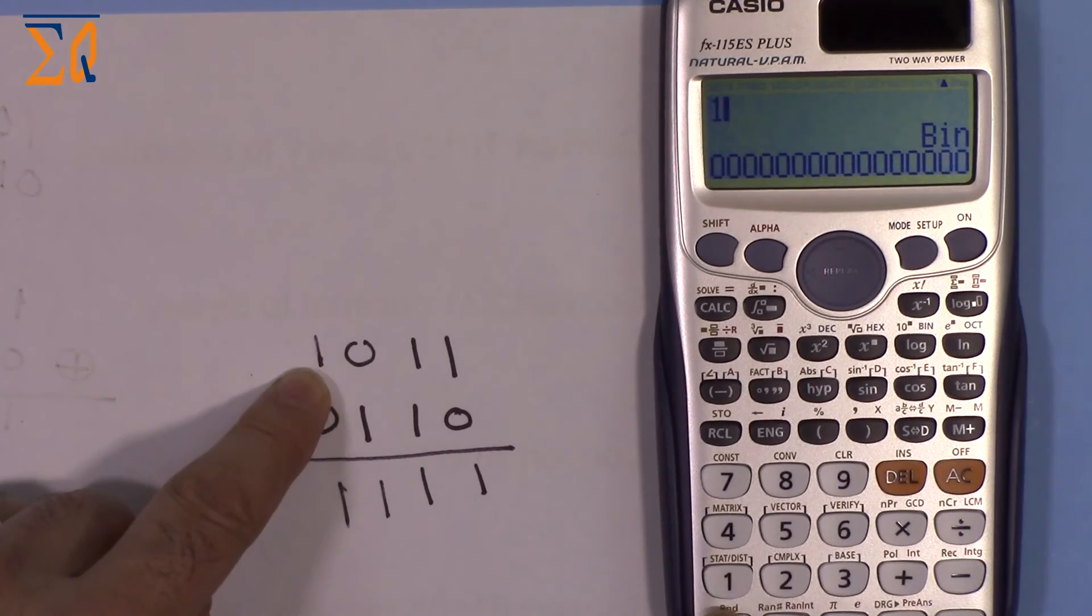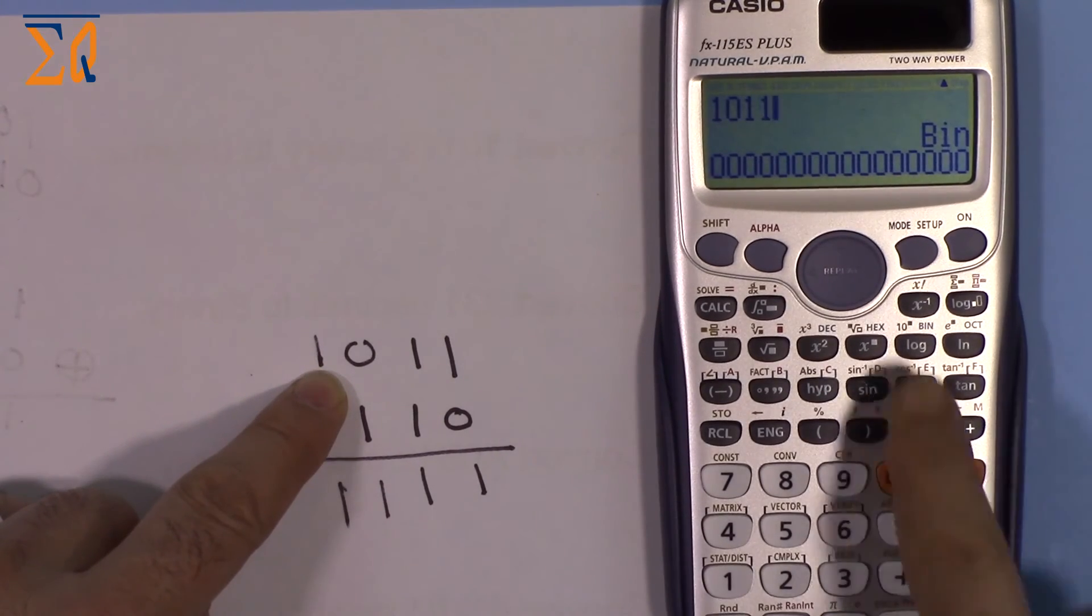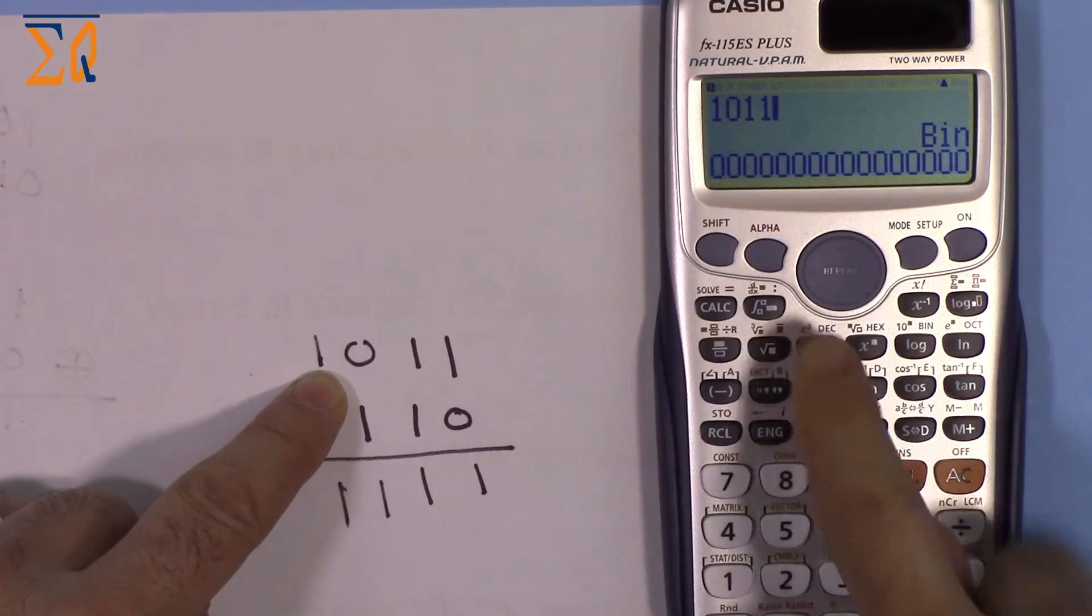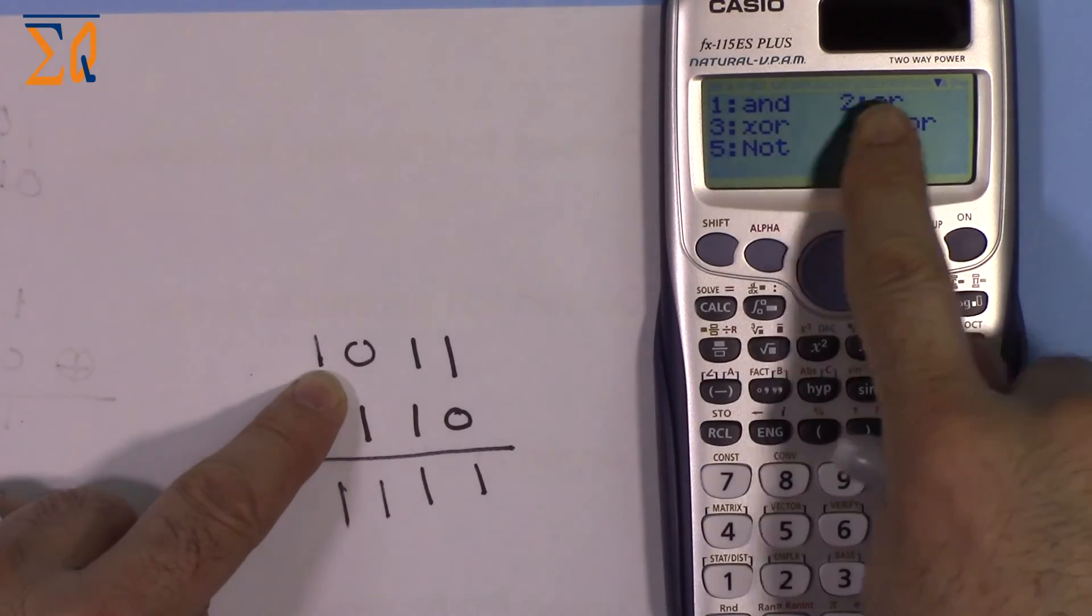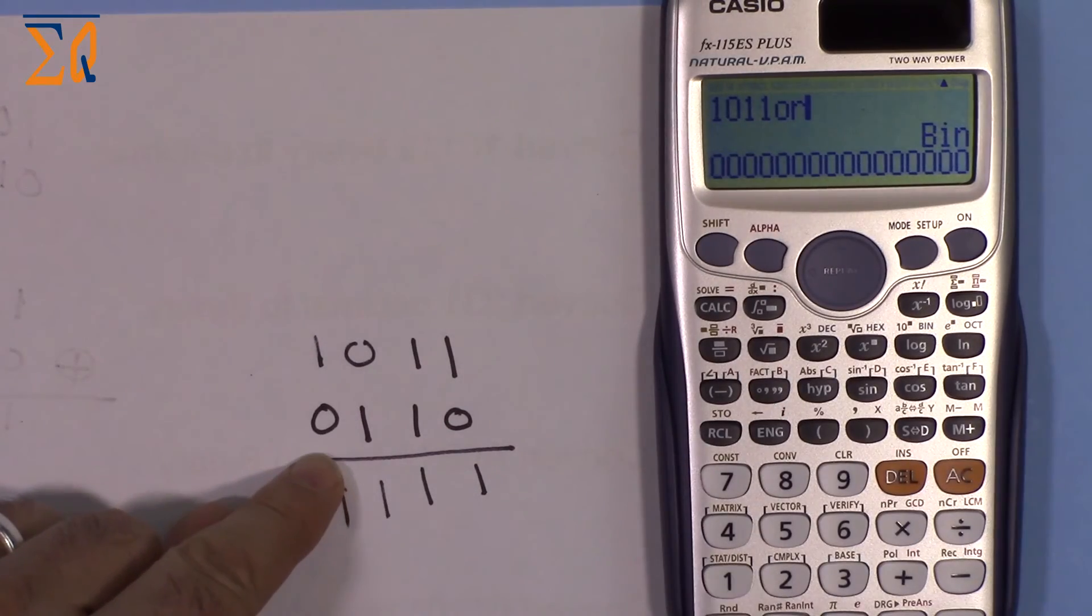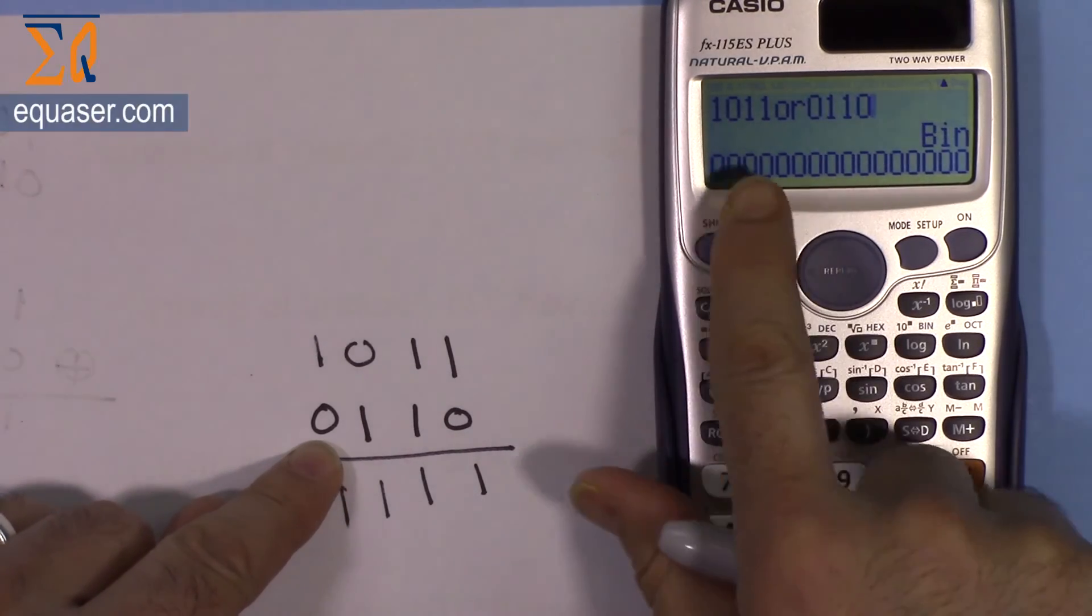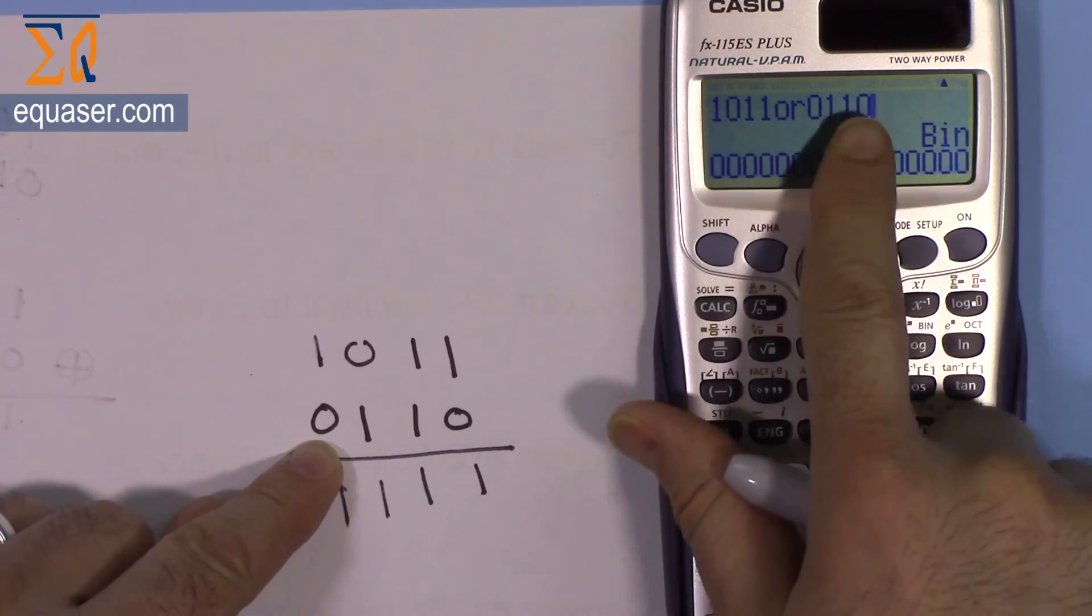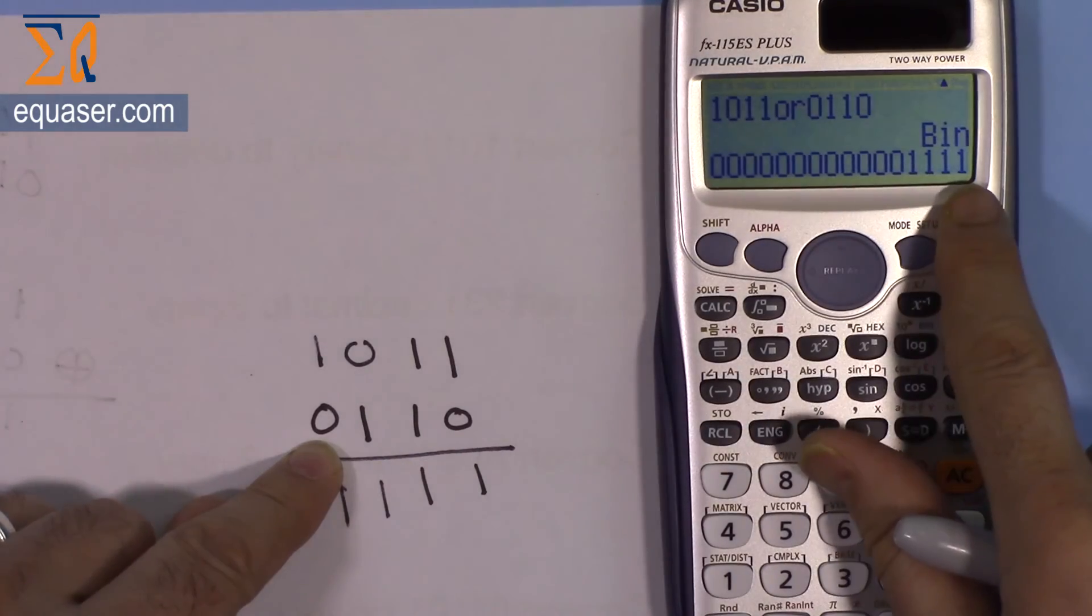Entering 1011, then shift, base, OR which is number 2. Then 0110. The result is 1111. This value OR this value gives 1111.